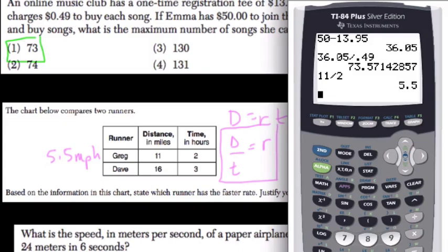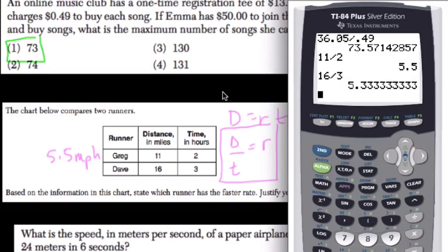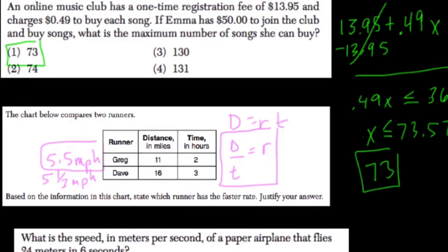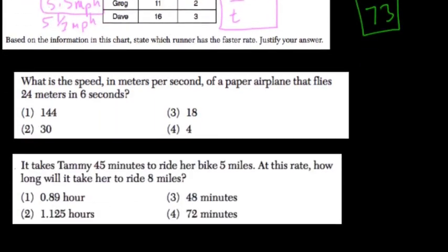Dave is 16 divided by 3, which is certainly going to be a little bit smaller there — 5.5 miles per hour — so Greg has a higher rate. You can justify that by showing your work.